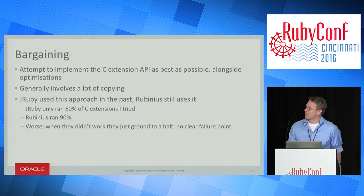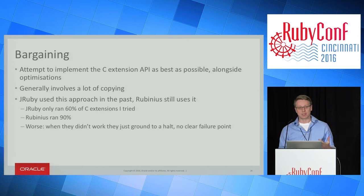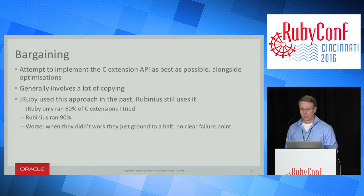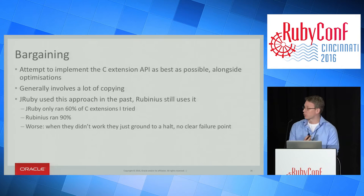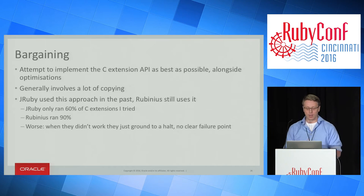Bargaining: we can attempt to implement the C extension API alongside our optimizations. This generally involves a lot of copying. If we have our string represented in a clever way internally, when we expose it to the C extension we could copy it all out to a big C array. But that's an unbounded problem — your string could be gigabytes in size, and if each time you go to C and back you copy the whole thing, everything grinds to a halt. JRuby used this approach in the past and Rubinius still uses it today. JRuby only ran about 60% of the C extensions I was interested in; Rubinius ran 90%, which is better. But the worst thing was when they didn't work, there was no error — they just ground to a halt at a really slow pace.